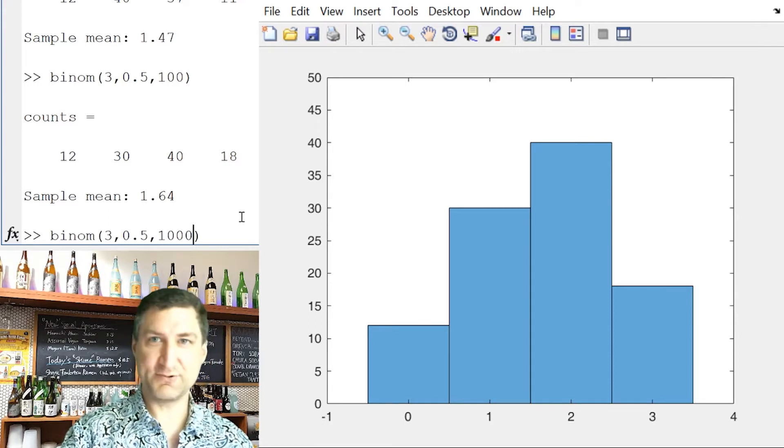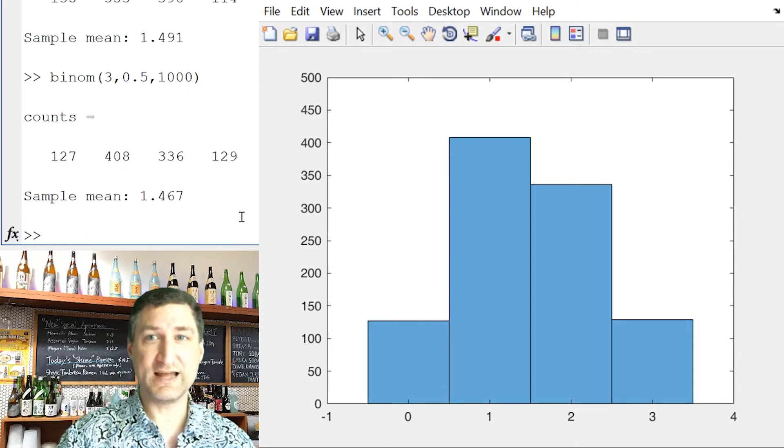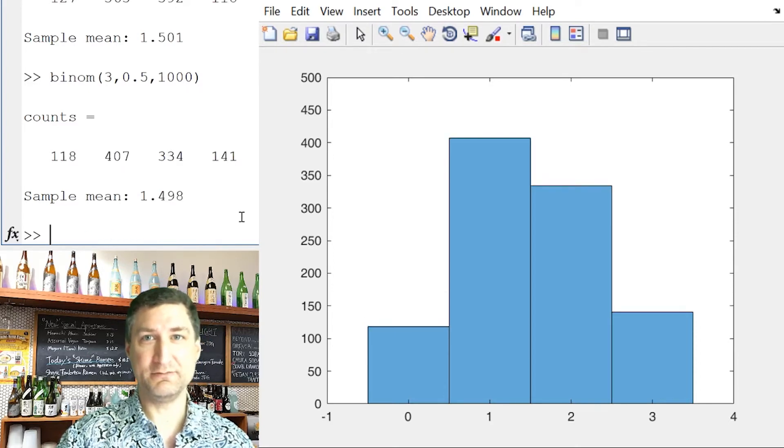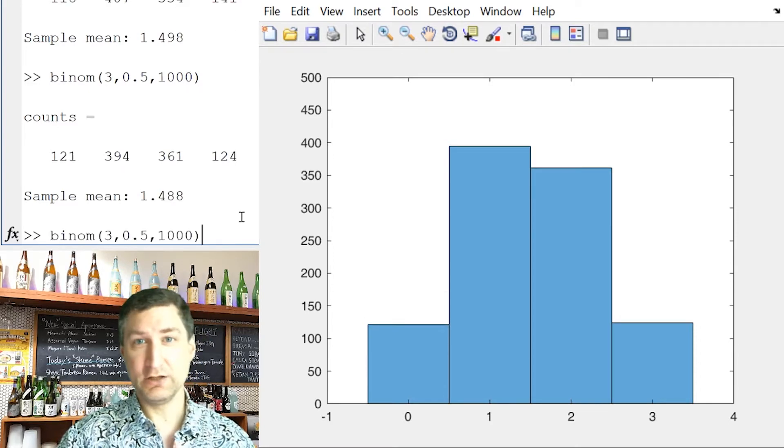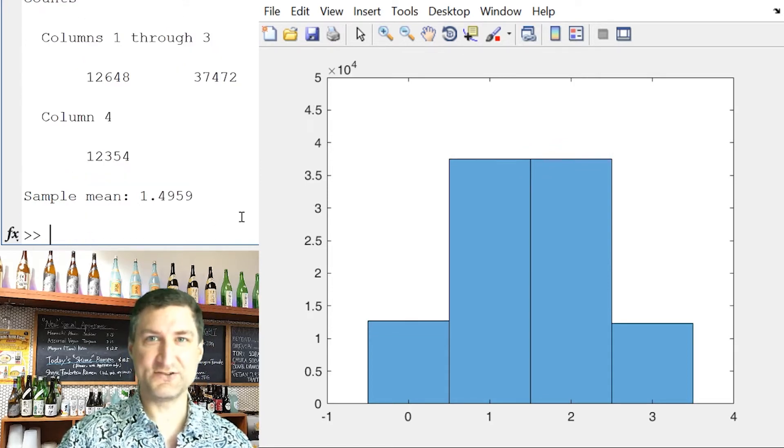But the more trials I do, so let's suppose I do 1000 trials now. So now my bar graph looks a lot more like the underlying PMF, and my sample mean looks a lot more like the expected value. And if I do, say, 100,000 trials, well now things are going to be very consistent, I'm going to be very close to 1.5.